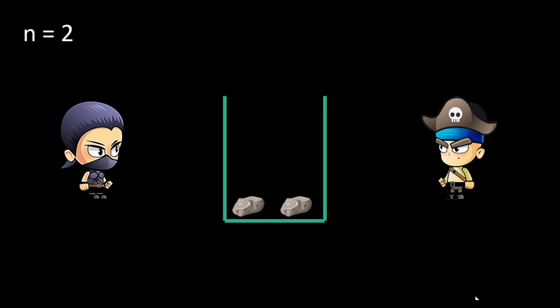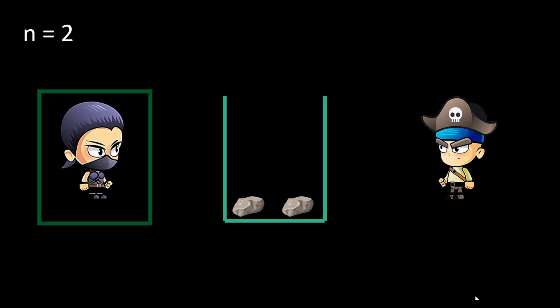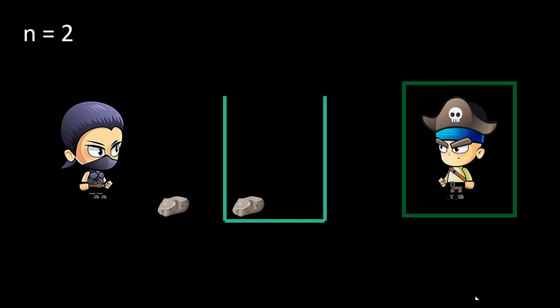Now we come across n equals to 2. There are 2 stones present and the first turn is Alice's. She can only take 1 stone, as 1 is the smallest value which is a perfect square. She takes 1 stone and now it's Bob's turn. He also takes 1 stone, leaving nothing for Alice, and that's why Bob wins the game. Whoever is going first when there are 2 stones will lose the game. So for n equals to 2, we return false.